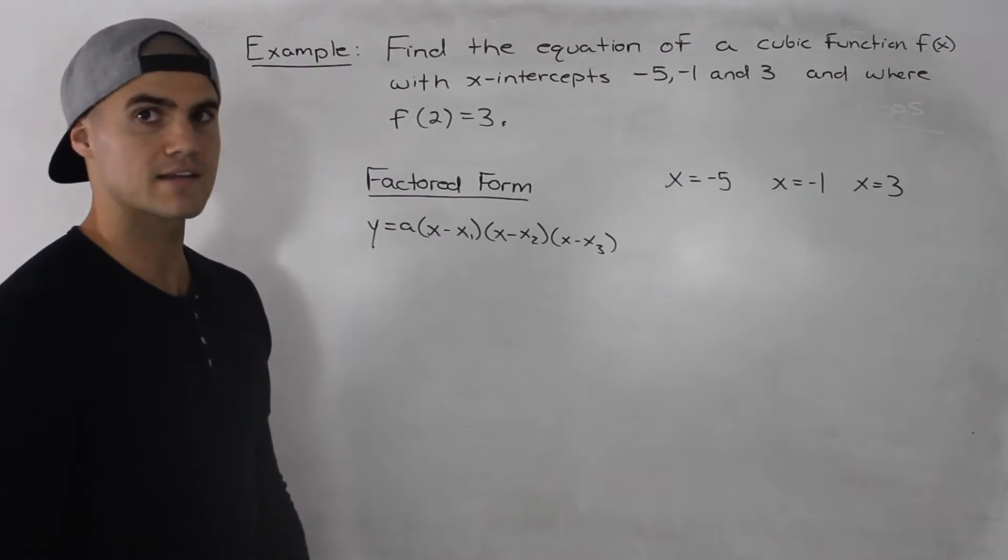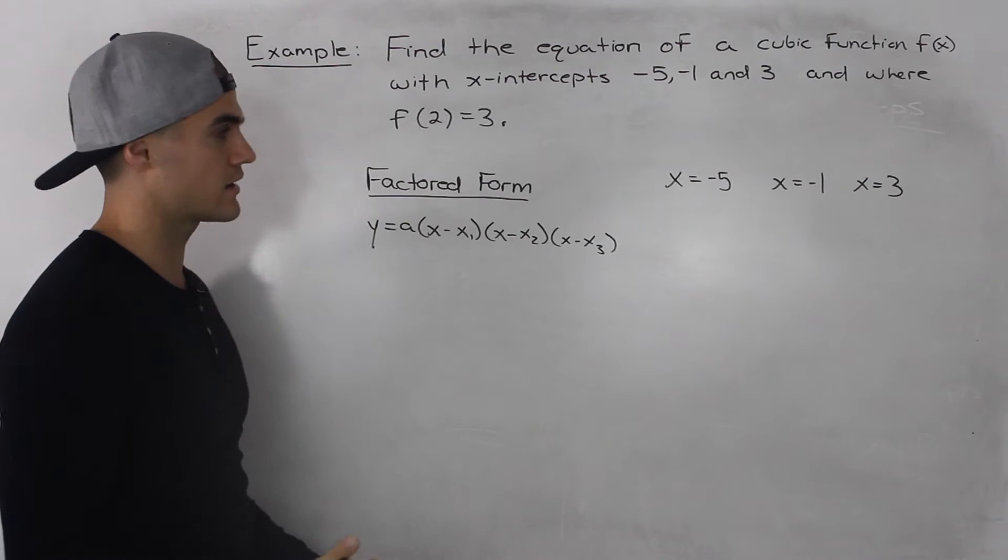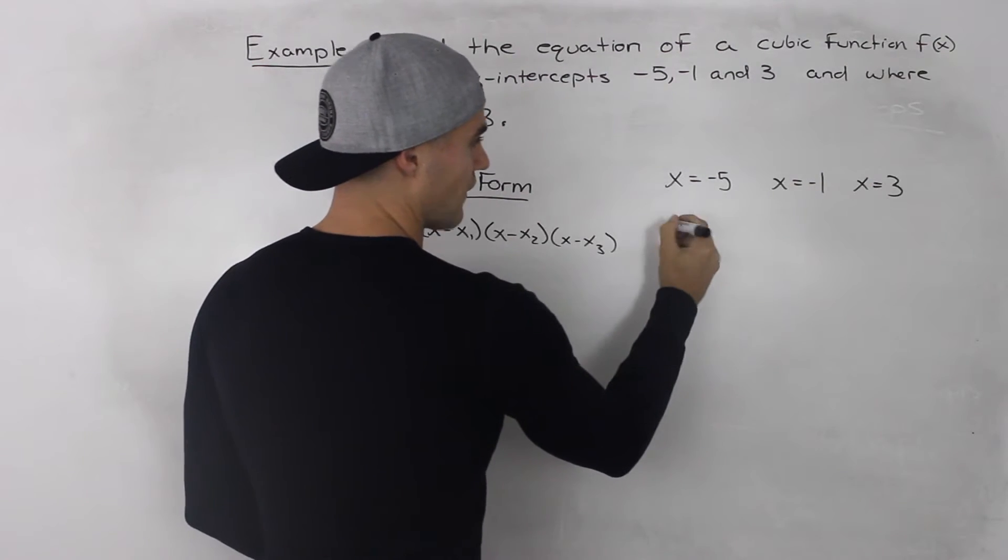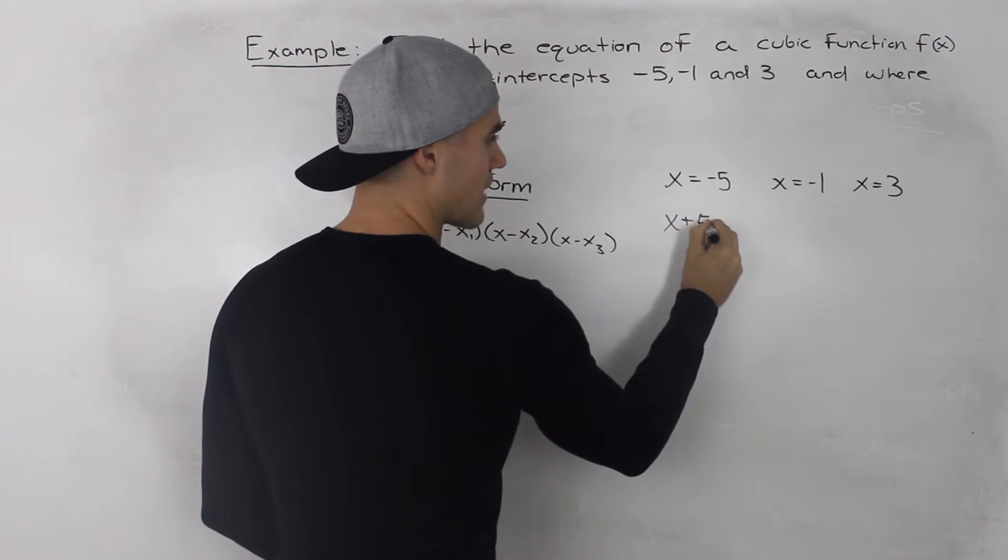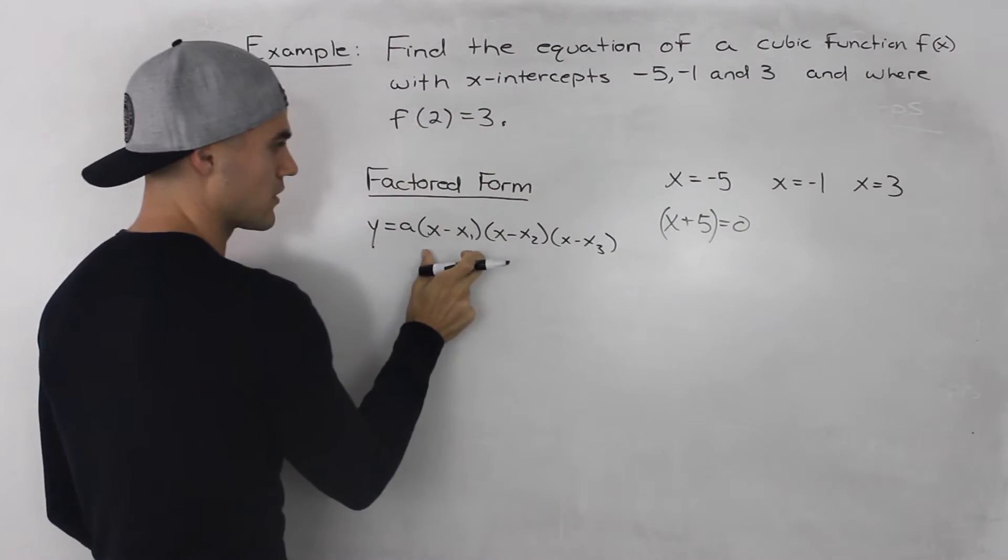We're given the x-intercepts of -5, -1, and 3, and we have to figure out what each of these brackets are. So what we would do is we would bring over the 5, and we'd have x + 5 = 0. So we know that (x + 5) is one of the brackets.